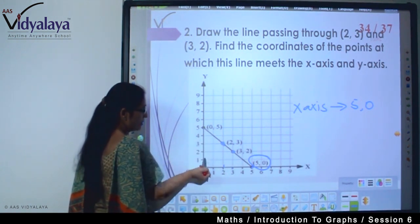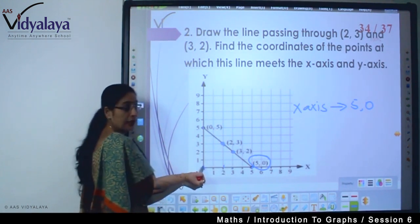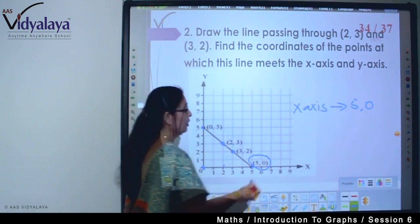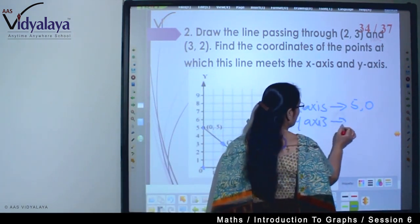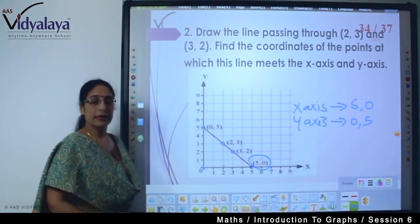Where is it meeting x-axis and y-axis? What do you see? It is zero five. The x value going is zero and the y value going is five. On the y-axis it is meeting at zero five.